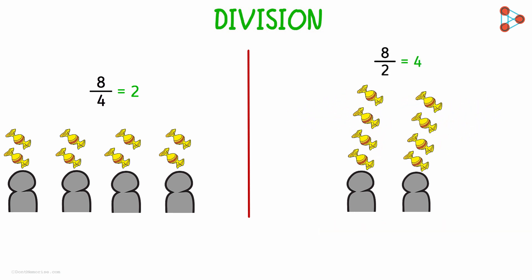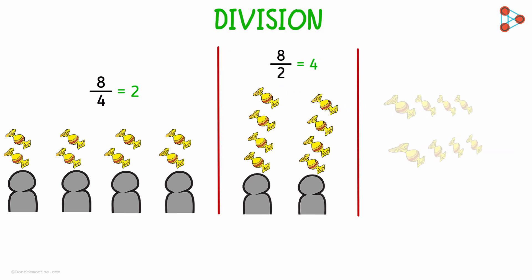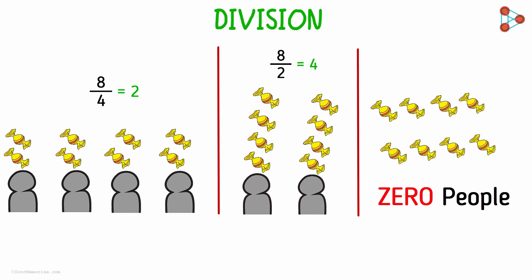Let's act a bit crazy now. Let us divide 8 chocolates equally among 0 people. That is, 8 divided by 0. Does it even make sense to divide 8 chocolates amongst no one? No it doesn't. Hence we say this is undefined. Or in other words, any whole number divided by 0 is undefined.